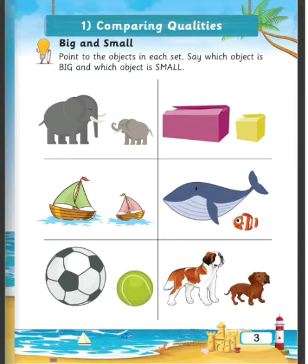Students, Big means Bada, and Small means Chota. Children, look at the first page. There is a comparison between Big and Small.